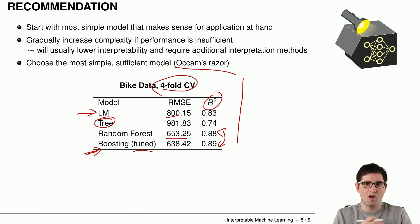The so-called Occam's razor tells you that you should choose the most simple sufficient model in the end and with these words I conclude this session.